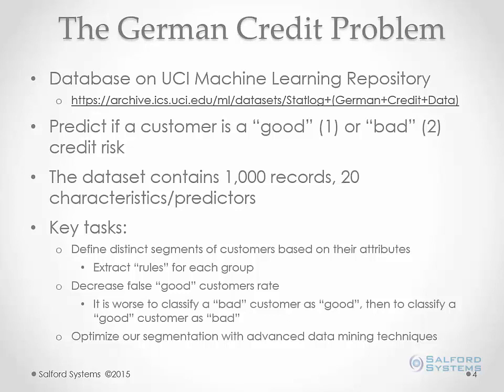The problem we will be looking at is the German credit problem — a database on the UCI machine learning repository. Our task is to predict whether a customer is a good or a bad credit risk. The data set has 1,000 records and 20 characteristics of each customer that we'll use to segment our database. Our key tasks include defining distinct segments based on attributes and extracting rules for each group.